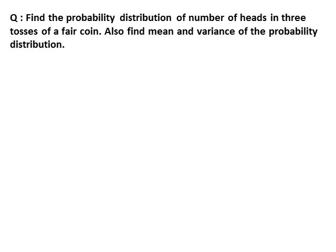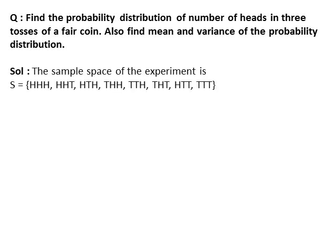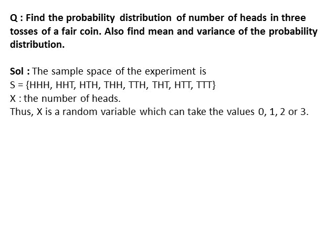Next question: find the probability distribution of the number of heads in 3 tosses of a fair coin. Also find the mean and variance of the probability distribution. First we find the probability distribution of the number of heads when a fair coin is tossed 3 times. The sample space contains 8 possible outcomes. Here x represents the number of heads, so x is a random variable which can take values 0, 1, 2, or 3.